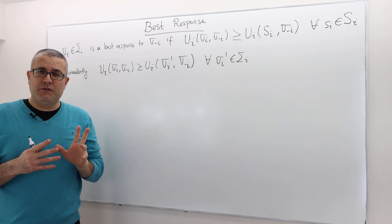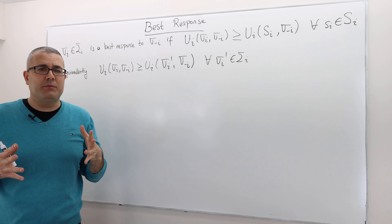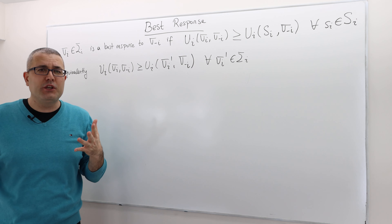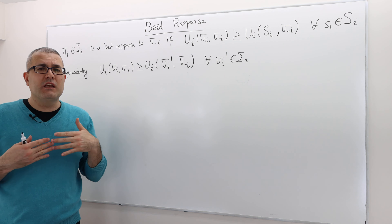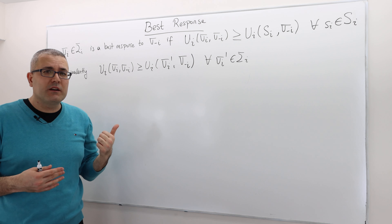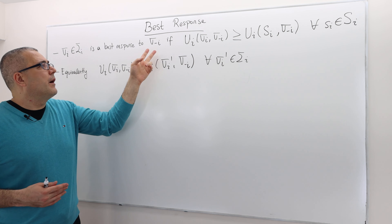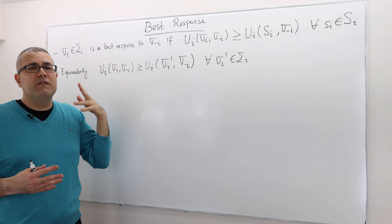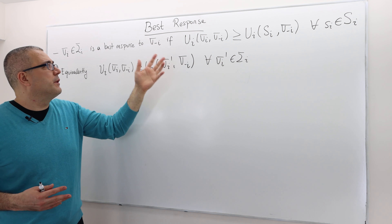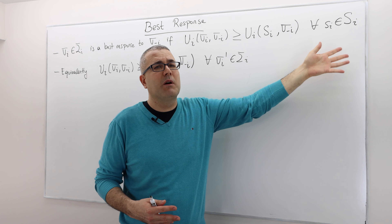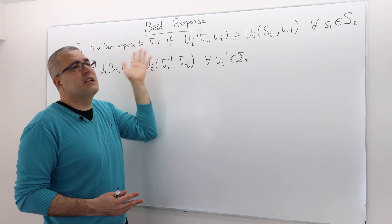The dominant strategy, if you remember, is the universally best strategy because whatever your opponents do, the dominant strategy is going to give you a strictly higher payoff. Here, first of all, it's not strict. And second of all, it doesn't say that it's going to give you a higher payoff regardless of what your opponents do, because we do not say this is true for every sigma_{-i}. This is true only for some sigma_{-i}.